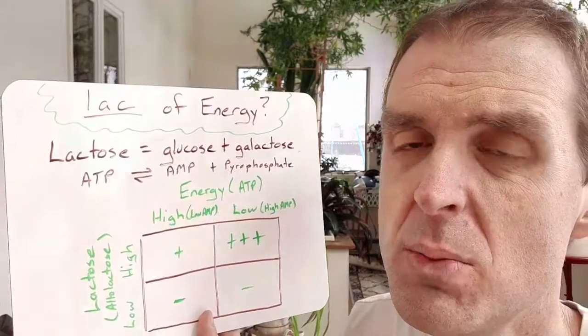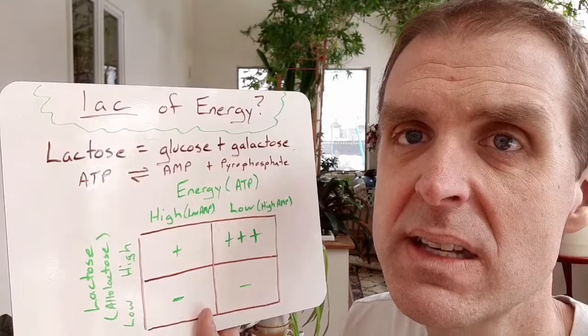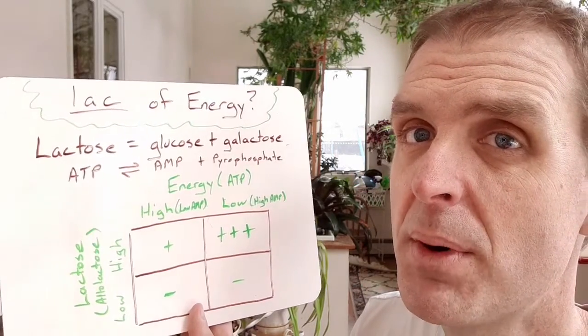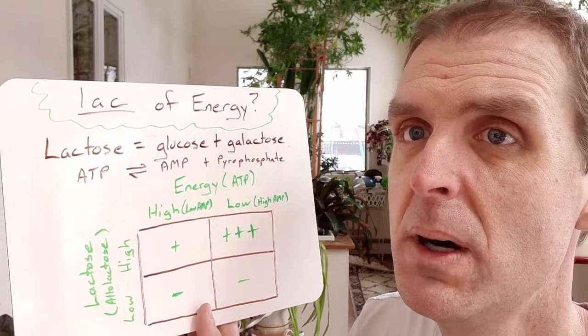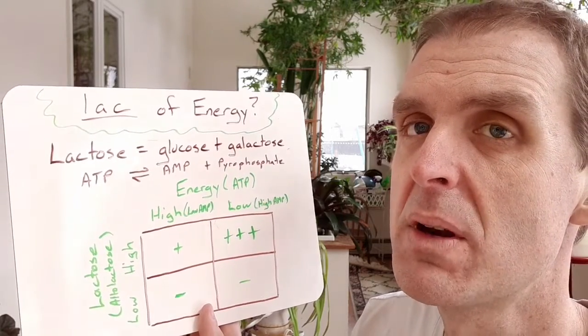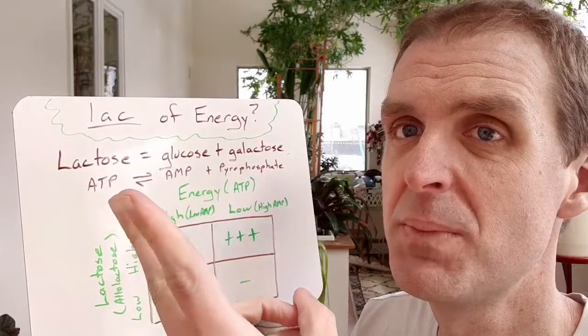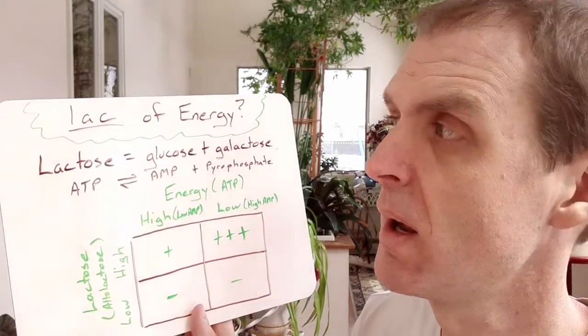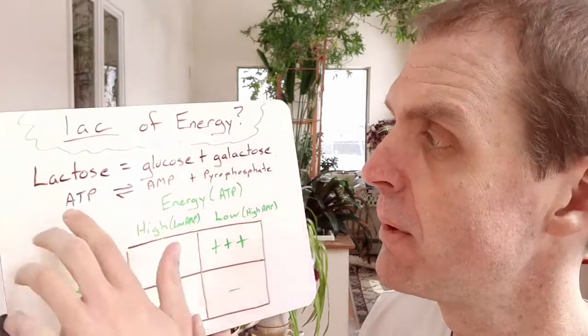These are going to be a set of enzymes that can help break down lactose. So with the trp operon, we're building tryptophan. With the lac operon, we're going to break down lactose. There's already the first example of where we need to switch our thinking compared to the trp operon.